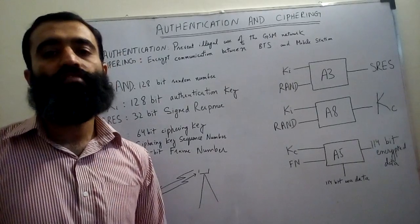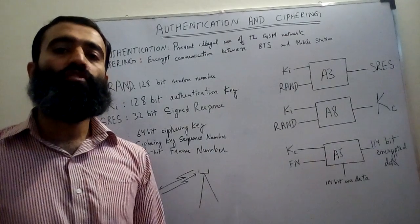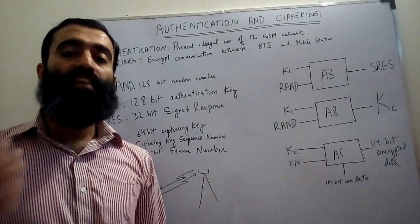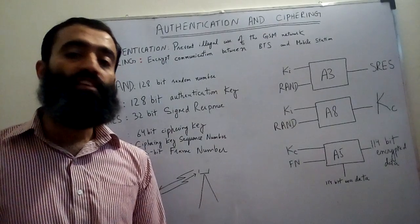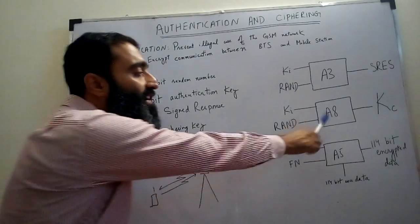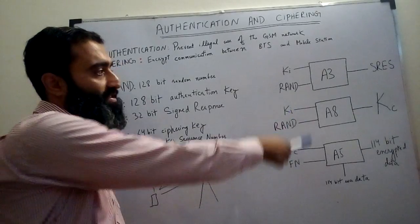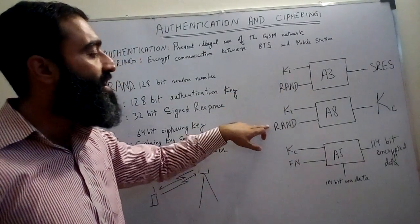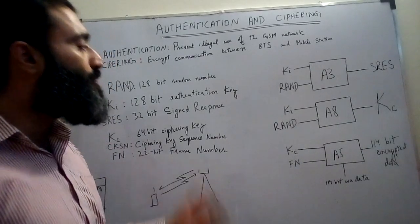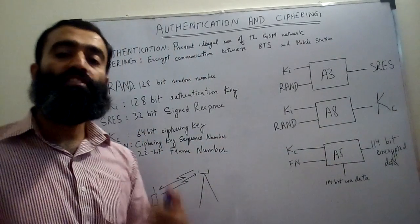Once the authentication procedure is complete, we go to the ciphering procedure. The ciphering procedure consists of two parts: first, the generation of the ciphering key, and then in the second part this ciphering key is used to encrypt the data. In the first part, the A8 algorithm is used for generation of the ciphering key. A8 algorithm has two inputs just like A3: Ki and the random number supplied by the network. The output of A8 is the ciphering key, which is a 64-bit number.